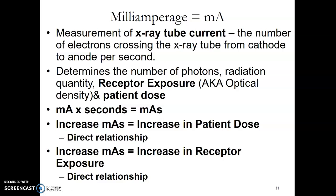Milliamperage, or MA, is the measurement of X-ray tube current — the number of electrons crossing the X-ray tube from cathode to anode per second. It determines the number of photons — remember, quantity. It controls receptor exposure, which used to be called optical density, a term the ARRT has moved away from. You need to know receptor exposure, and it's directly related to patient dose.